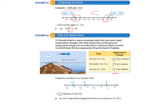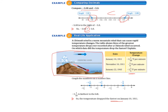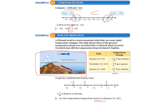We are going to graph our numbers on a number line, with 0 on the right because all of these numbers are negative. Negative 5 eighths is just to the left of negative 1 half. Negative 2 and 1 fifth is past negative 2. And negative 3 and 1 tenth is past negative 3. Negative 3 and 1 tenth is farthest to the left, so the temperature dropped the fastest on January 10th, 1911. We know it was the fastest because it is the most negative number — the greatest temperature change, farthest away from zero.